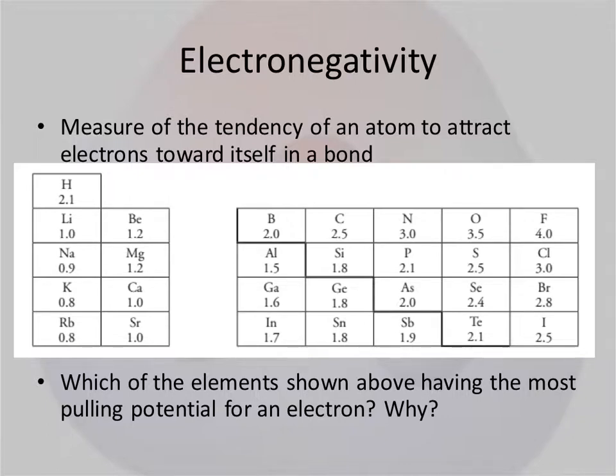Here are some basic values. You see that electronegativity increases going this way on the periodic table and this way on the periodic table. And the noble gases are not over here because they don't have those values.